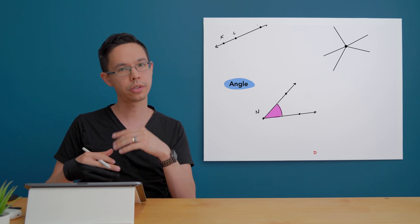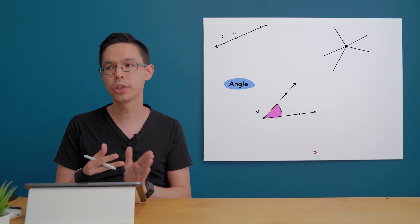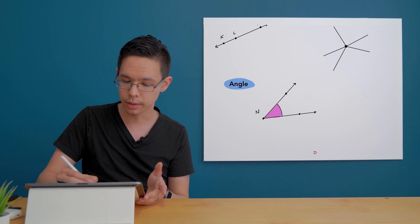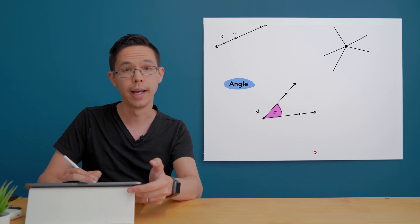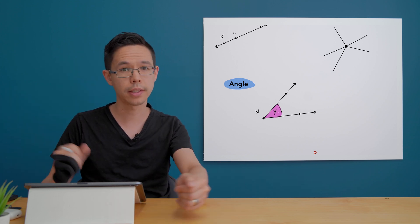Sometimes when you're working with angles you'll actually be given a label already on the diagram. Usually the letters that we use on the angle are Greek letters. So that'll be labels like theta, alpha, beta, gamma and so forth. These are all Greek letters from the alphabet.